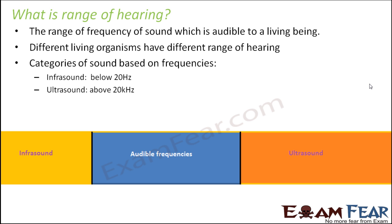This represents the various frequencies of sound. For human beings, the audible range starts from 20 hertz. Sounds of frequency 20 hertz are audible to us, and we can hear sounds up to 20 kilohertz, that is 20,000 hertz. So this is our audible range.